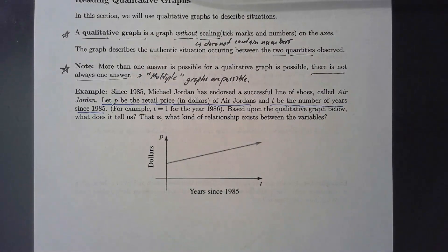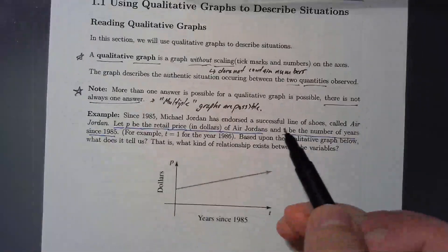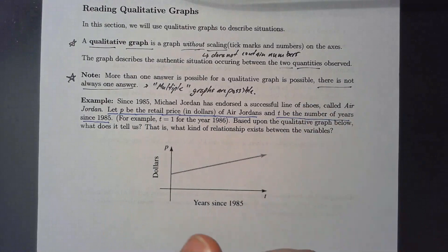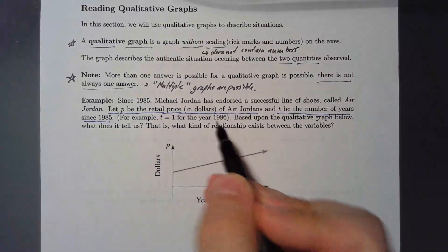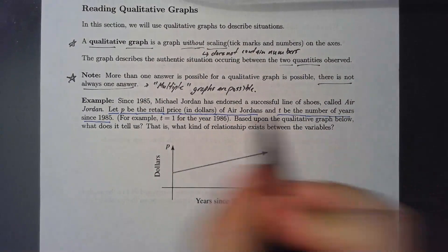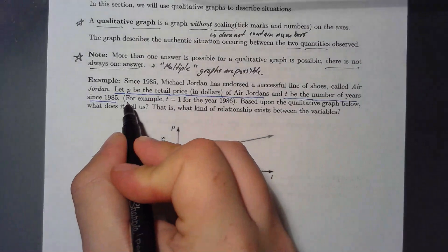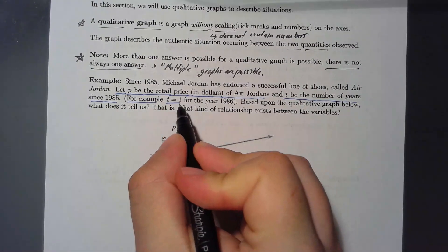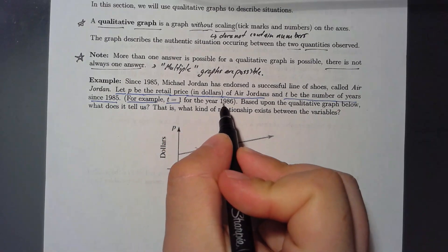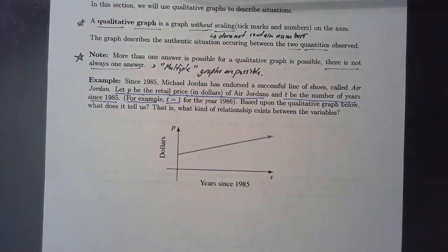One thing you'll have to be aware of — and this is true in graphs in general — you want to be able to understand the variables and what they're defined to be. T is the number of years since 1985, not the actual year itself. For example, when T equals 1, since 1 represents the number of years since 1985, this is referring to the year 1986. Understanding what the variables are defined as is very important.